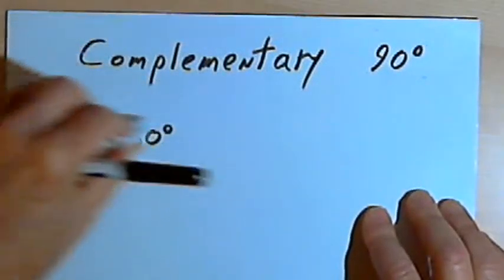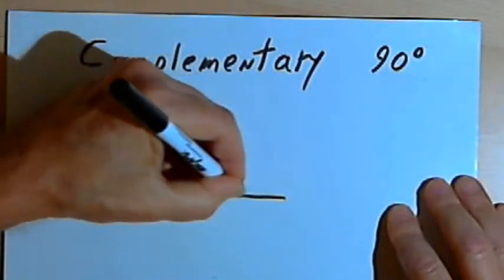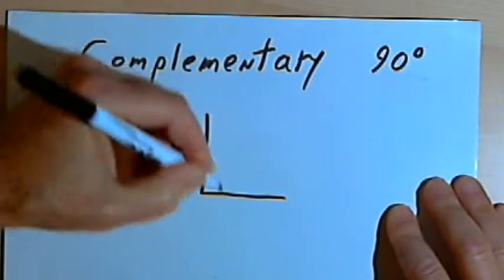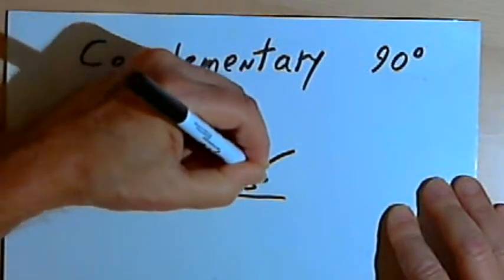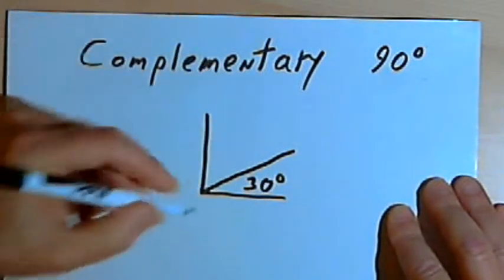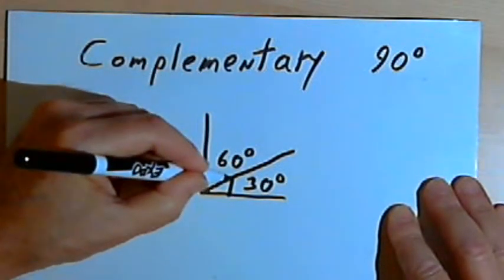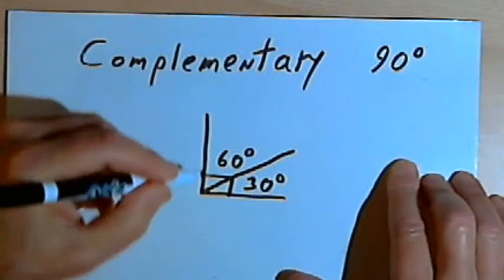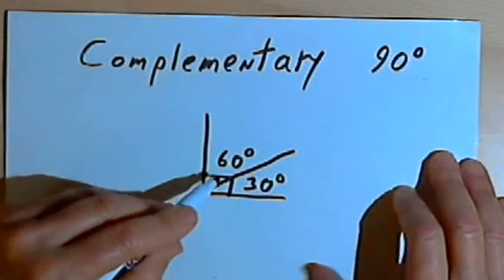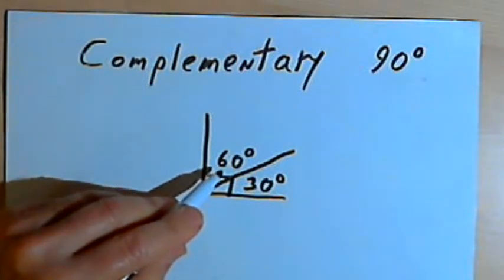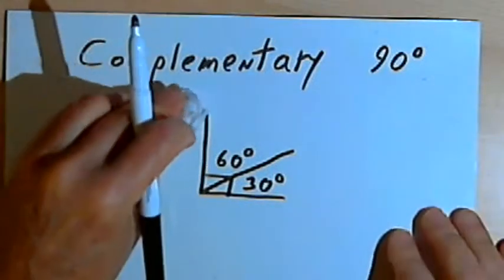If you put two complementary angles together, you're going to get a right angle. So here's a right angle — let's say that we have divided that into two adjacent angles. One is 30 degrees and one is 60 degrees. Well, 30 plus 60 is 90, and a right angle is a 90-degree angle. Now that doesn't mean that angles have to be next to each other — they don't have to be adjacent for them to be complementary.